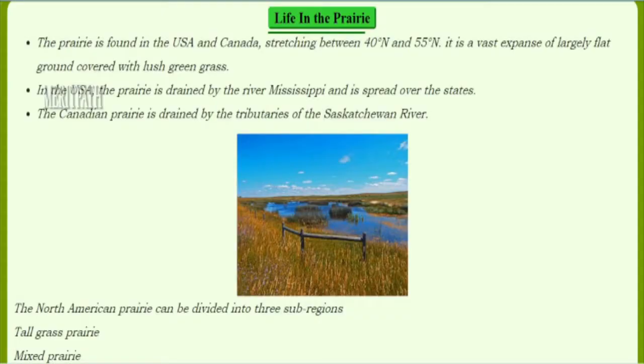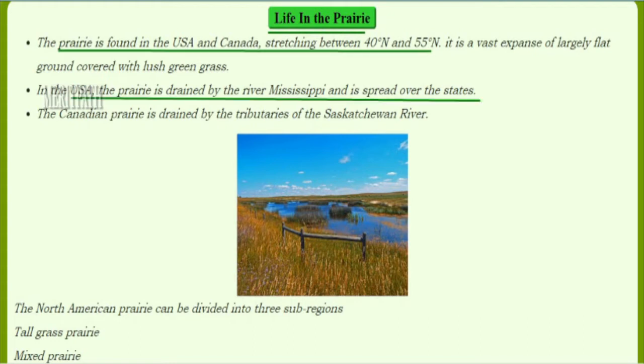Let's study about a new chapter called life in the temperate grasslands. First, let's study about the life in the prairie. This prairie is found in the USA and Canada and stretches between 40 degrees north and 55 degrees north latitude. The prairie is a vast expanse of flat ground covered by lush green grass.